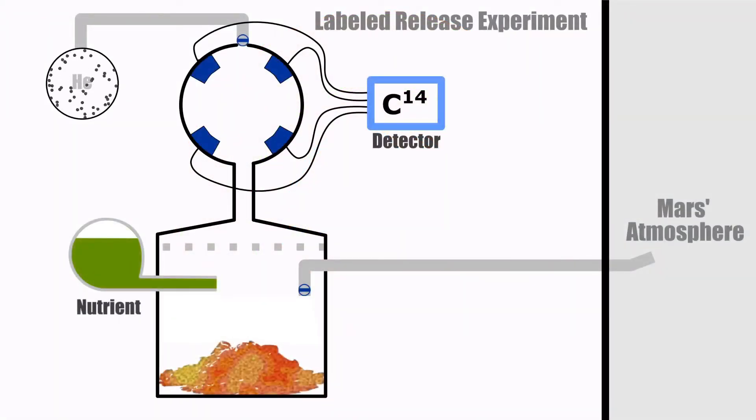Starting with soil in the chamber, a nutrient solution containing radioactive carbon-14 is added to the soil. The incubation chamber is connected to the detector chamber which contains the radioactive detectors, VR2.